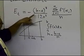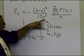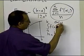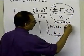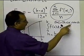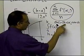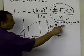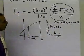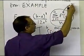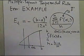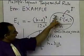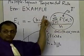The true error equals the cube of the interval difference divided by 12 n squared, where n is the number of segments, multiplied by a summation term. Alpha_i is some point between the lower and upper limits of integration for each particular segment. This term gives approximately the average value of the second derivative of the function, and as n increases, this quantity becomes approximately constant.